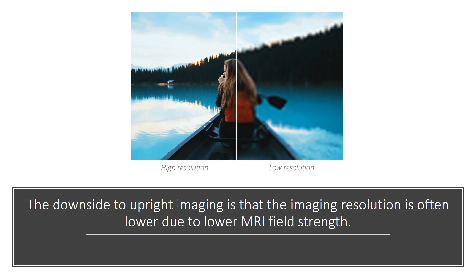The downside to upright imaging is that the imaging resolution is often lower, due to the lower MRI field strength that accommodates the ability to have a more open bore that allows motion.